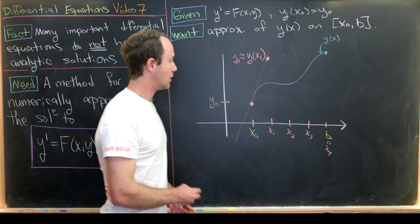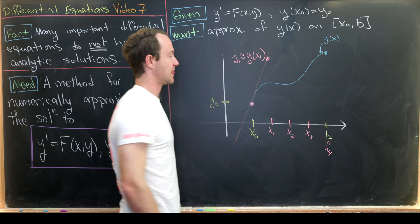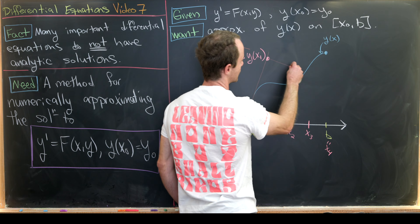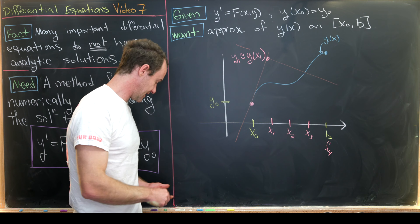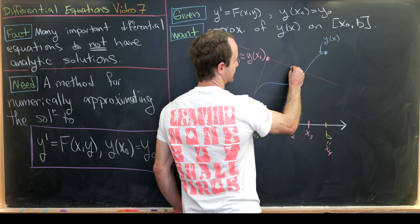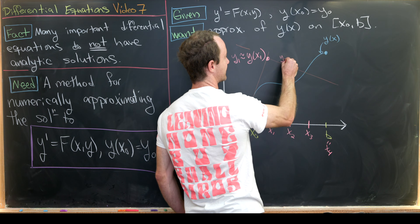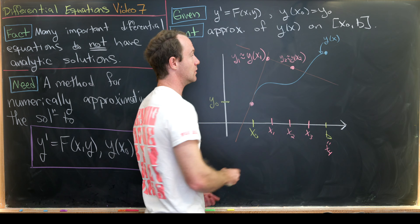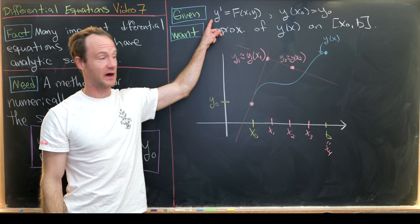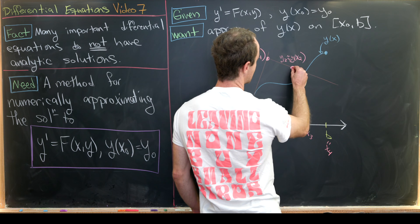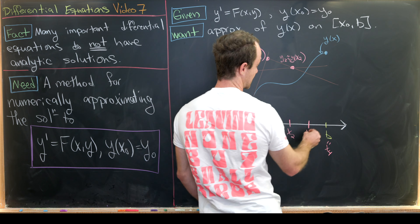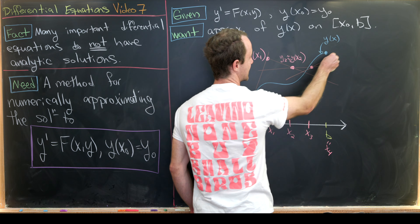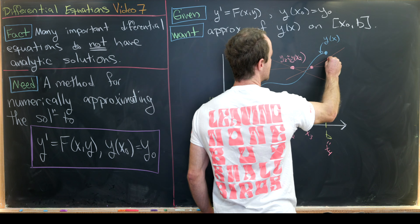From y1, we go to the point (x1, y1) and determine the slope of the tangent there — given by our differential equation. We ride that tangent line until we get over x2, calling that value y2, which is approximately y(x2). We continue this: knowing the slope at (x2, y2), we draw a tangent line and ride it to x3, then repeat to reach x4. Note that the slopes taken at (x1,y1), (x2,y2), (x3,y3) may differ from the slopes on the blue curve, since we're off the curve.